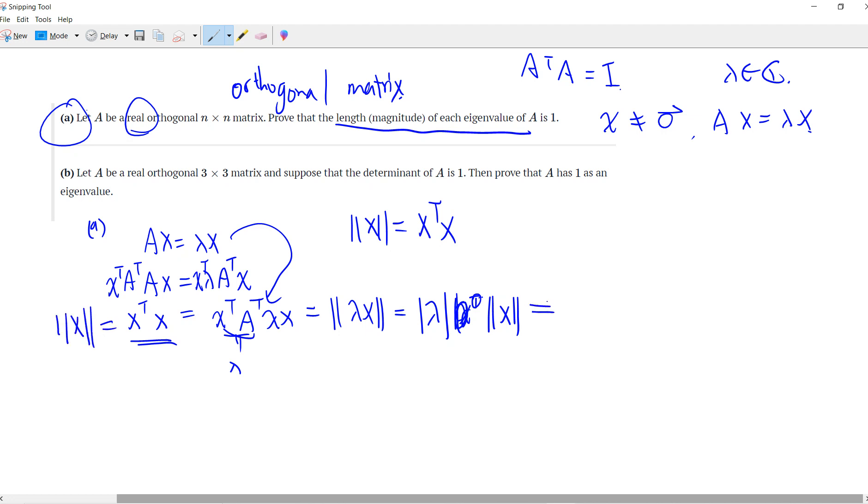From here, we know that we can cancel this x transpose x term. So what we have is that the absolute value of lambda is 1.